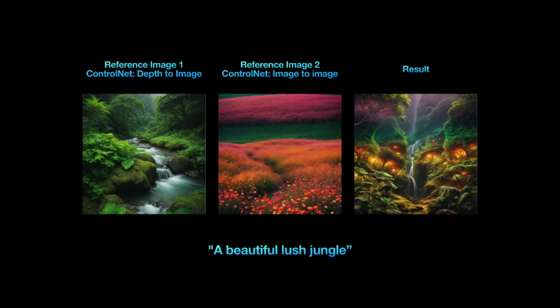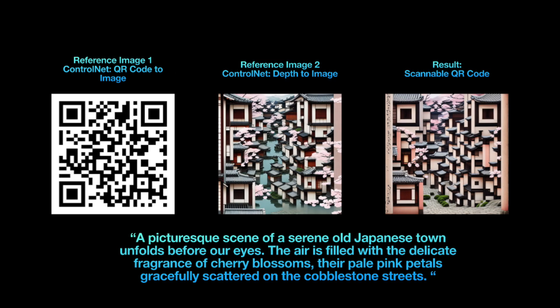In another example, I used an image of a river through a jungle for depth and a field of flowers for image to image. With the prompt 'a beautiful lush jungle,' Leonardo created a colorful imaginary jungle. Here's one more using QR codes — I wanted a QR code resembling an old Japanese town, so I used two reference images. The first was the QR code and the second was the outcome of my first QR code generation. Reusing that one added more depth, resulting in a QR code with much more depth. If you're on the free plan and still want to try this workflow, you can opt for an iterative process instead of uploading four images at once, but using the image guidance option does save a bit more time.